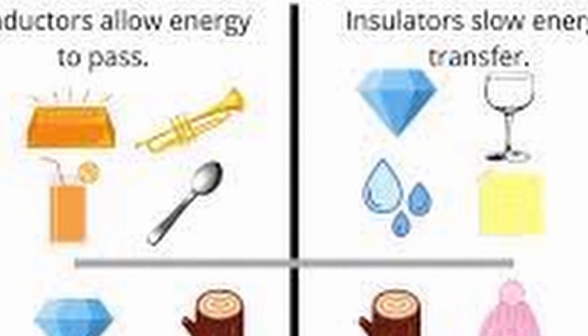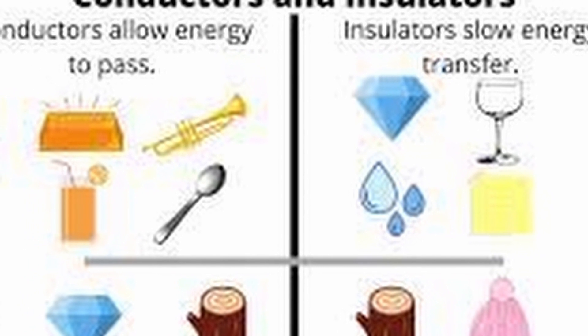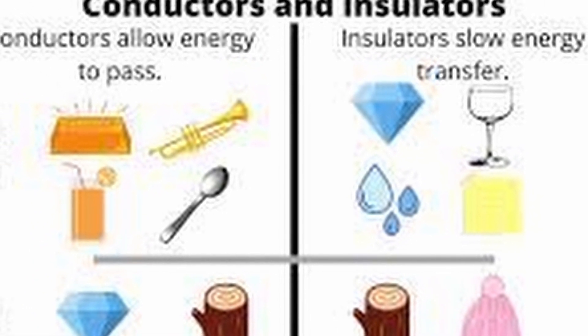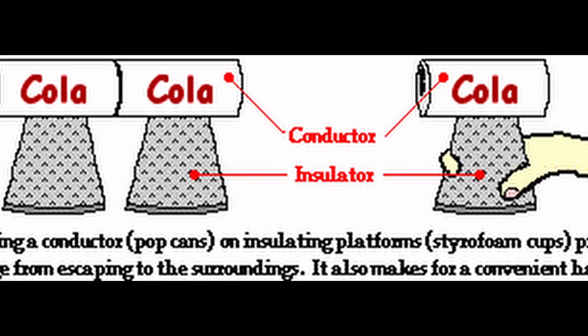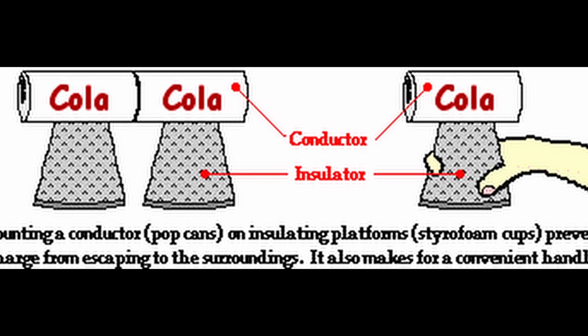Conductors and insulators: explain the difference between materials that conduct electricity effectively (conductors) and those that impede its flow (insulators). Provide examples of common conductors and insulators.